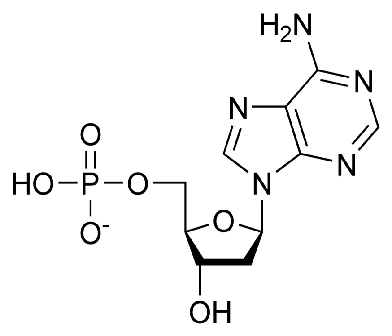The purine bases adenine and guanine and pyrimidine base cytosine occur in both DNA and RNA, while the pyrimidine bases thymine and uracil occur in just one. Adenine forms a base pair with thymine with two hydrogen bonds, while guanine pairs with cytosine with three hydrogen bonds.